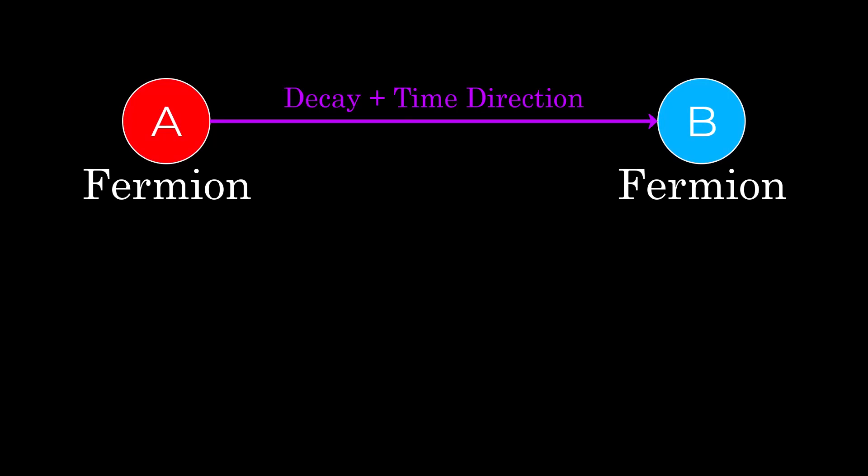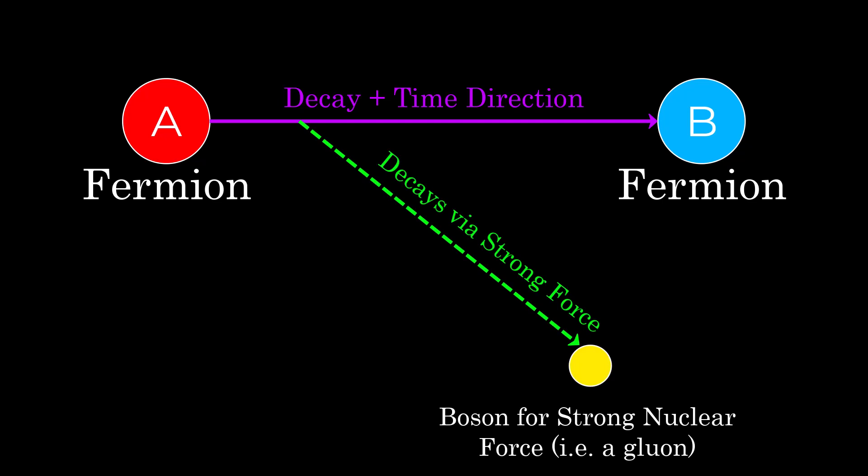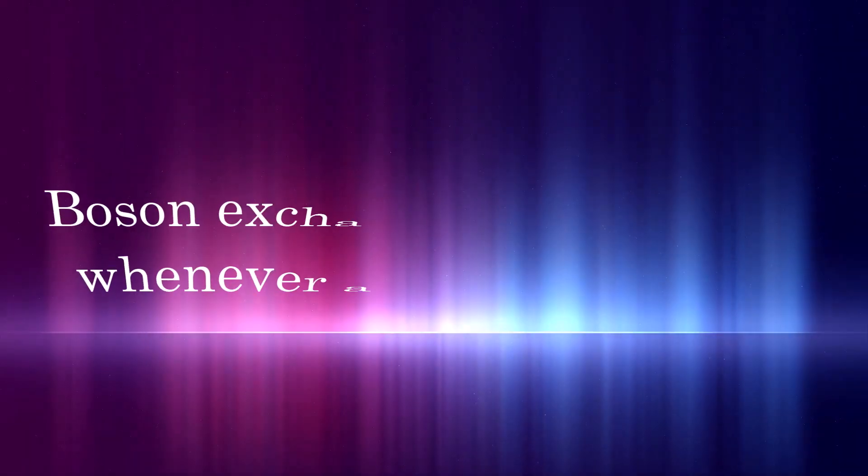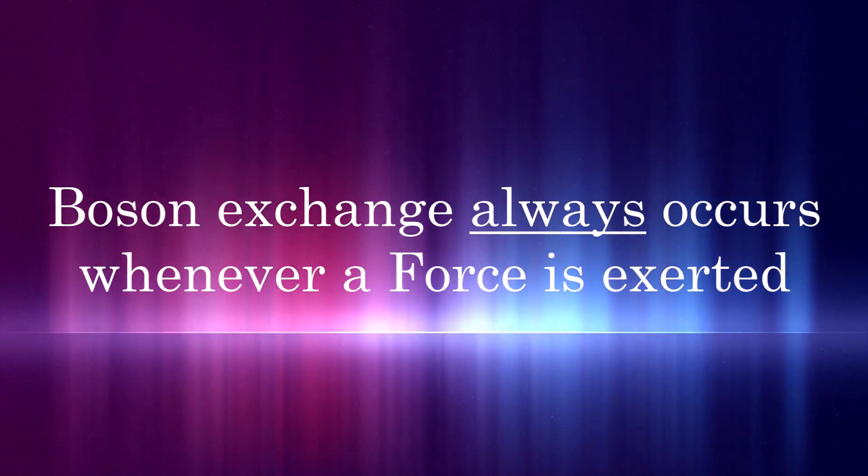For example, particle A, a fermion, may be able to decay into particle B, also a fermion. In order for this to happen, there must be some kind of force interaction. So particle A could decay via the strong nuclear force, which would mean it gives off a boson specific to the strong force, which allows the decay to happen. Let me make this concept abundantly clear. The effects of forces is through the transfer of bosons, and the boson which gets transferred is specific to the force being exerted.